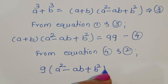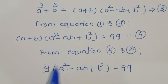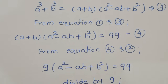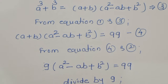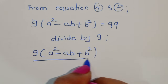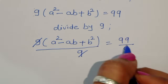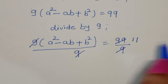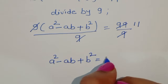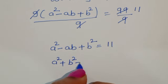Now we divide both sides by 9 to cancel the 9 on the left side. So 9 times a square minus ab plus b square, divided by 9, equals 99 divided by 9. The 9 cancels, and 99 divided by 9 equals 11. Therefore, a square minus ab plus b square equals 11.